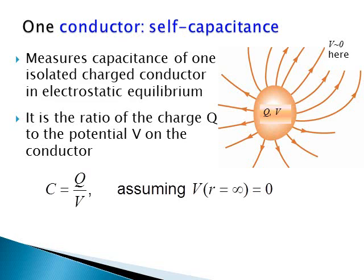Assuming that the potential is equal to zero very far from the object, we can calculate the ratio called C. It is equal to Q, the charge on the capacitor, divided by V.